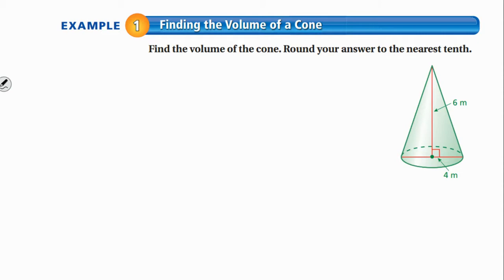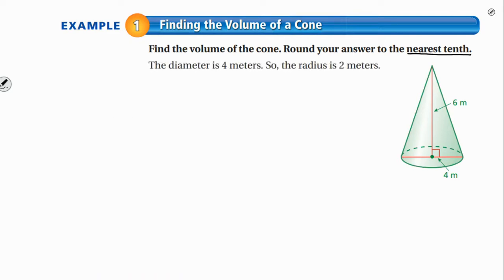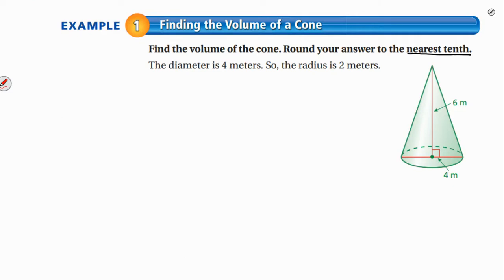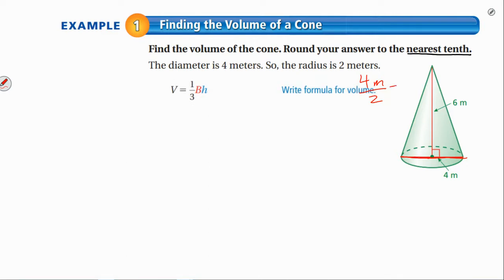Our first problem is to find the volume of the cone, and we want to round our answer to the nearest tenth. The diameter is 4 meters. This 4 meters is talking about the full length across, not just the radius. So in order to get the radius, which is 2, we take our diameter of 4 meters and divide it by 2 to get us 2 meters.